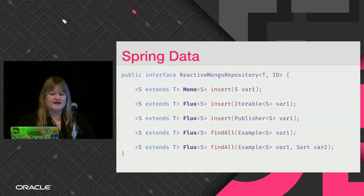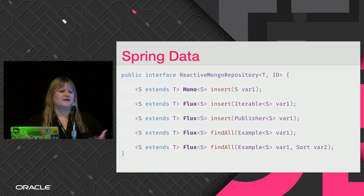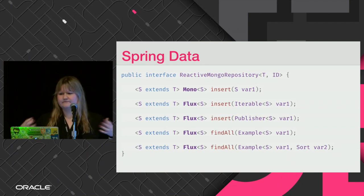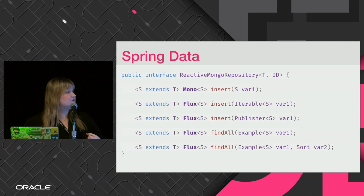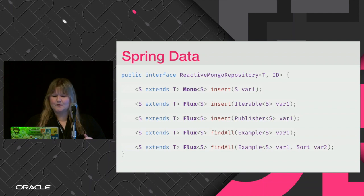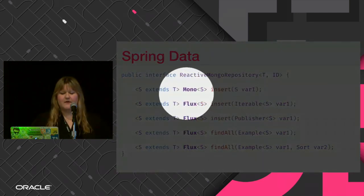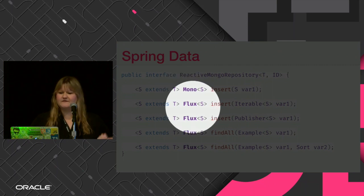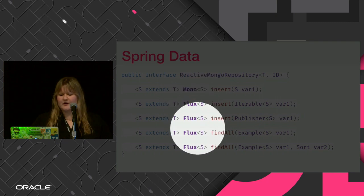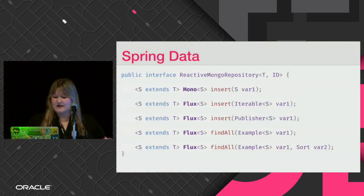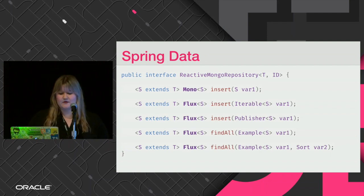The major difference is all about the data we publish to the subscriber. For the repository, instead of Optional or a List of objects, we have Mono for a single object and Flux for multiple objects. The return type for all methods — insert, find, update, delete — is either Flux or Mono depending on the results.